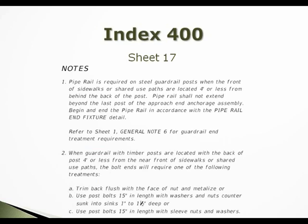The notes now read: note 1 — pipe rail is required on steel guard rail posts when the front of sidewalks or shared-use paths are located 4 feet or less from behind the back of the post. There was ambiguity about what constituted the actual distance, and CEI inspectors were requesting contractors to install pipe rail when measurements were 3 foot 10 or 3 foot 11. The pipe rail should always be part of the component plan set, and note 1 was clarified to address this.